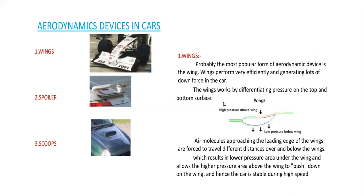Wings work by differentiating the pressure on the top and bottom surfaces. As air molecules approach the leading edge of the wings, they are forced to travel different distances over and below the wings, which results in a lower pressure area under the wings and allows the higher pressure area above the wings to push down on the wings, making the car stable during high speed. High pressure is created on top and low pressure below, and due to this pressure difference the wing moves downward, keeping the car stable.